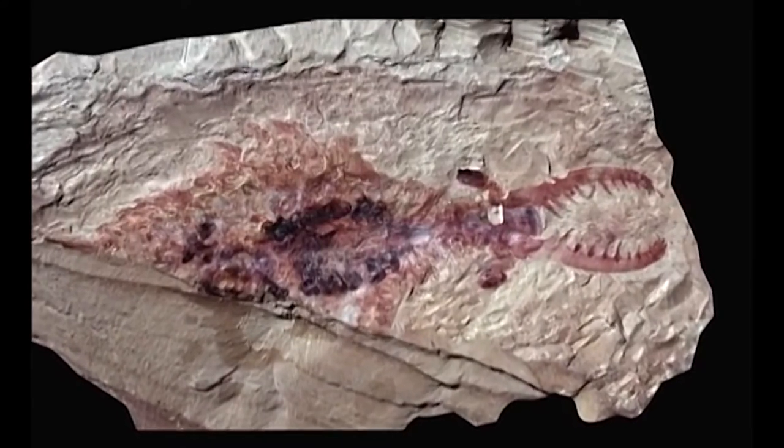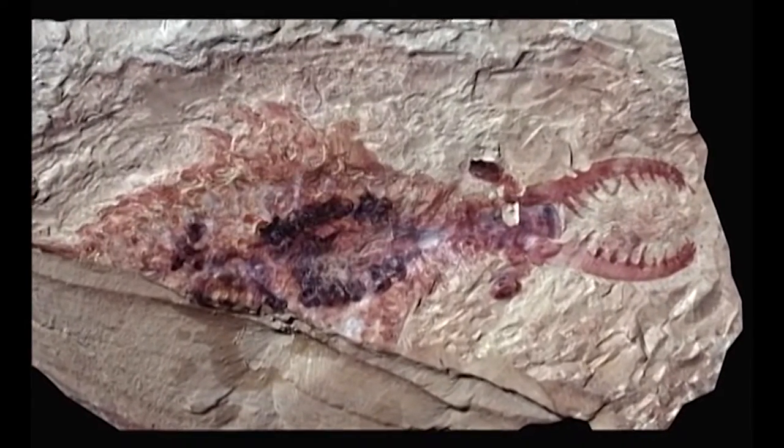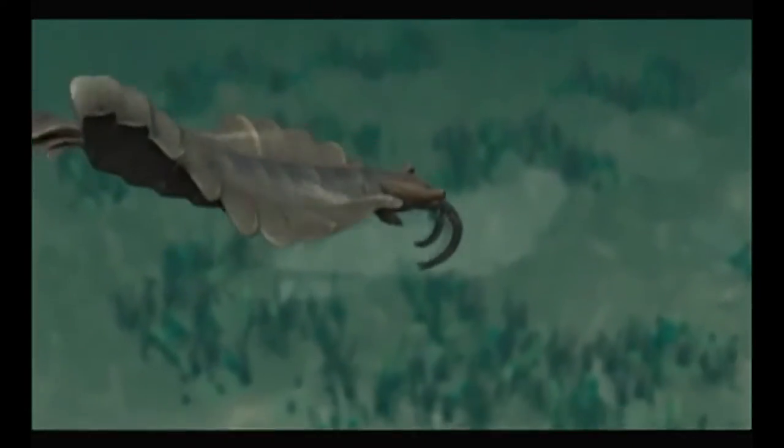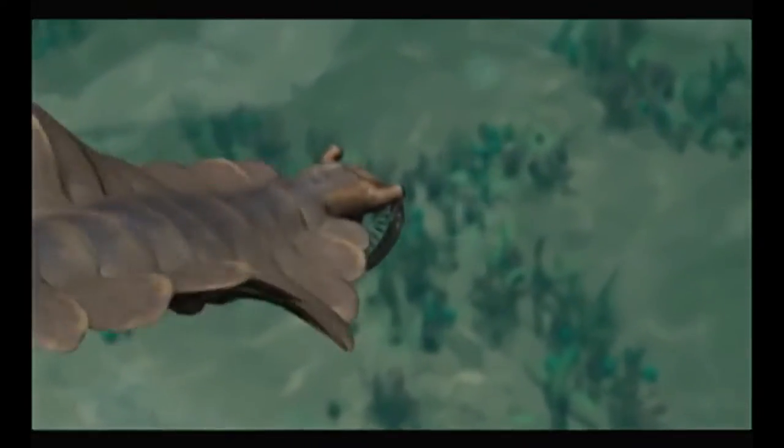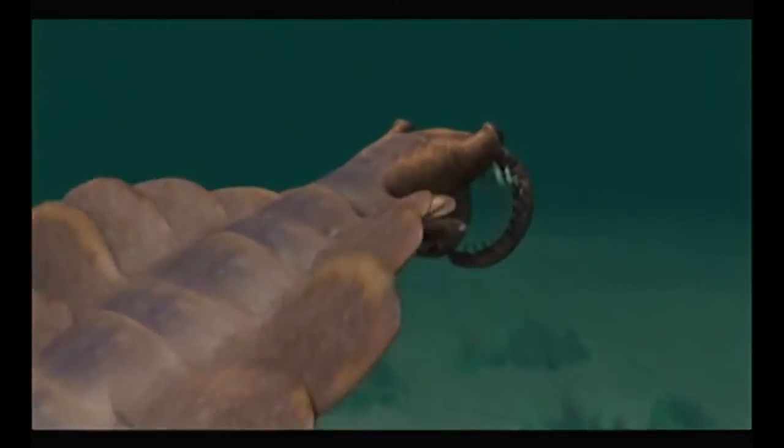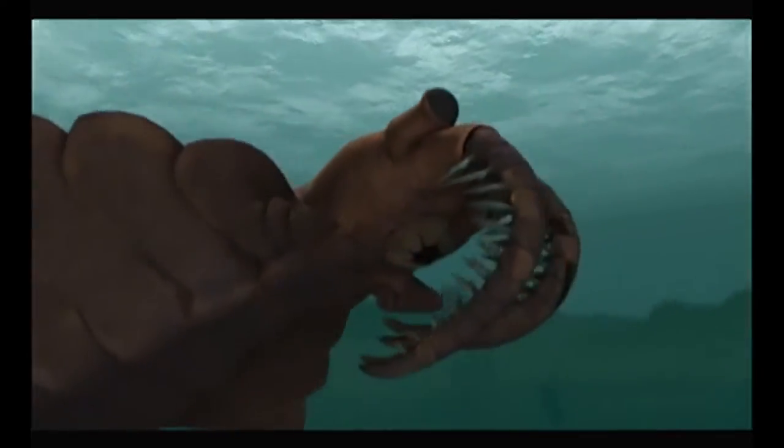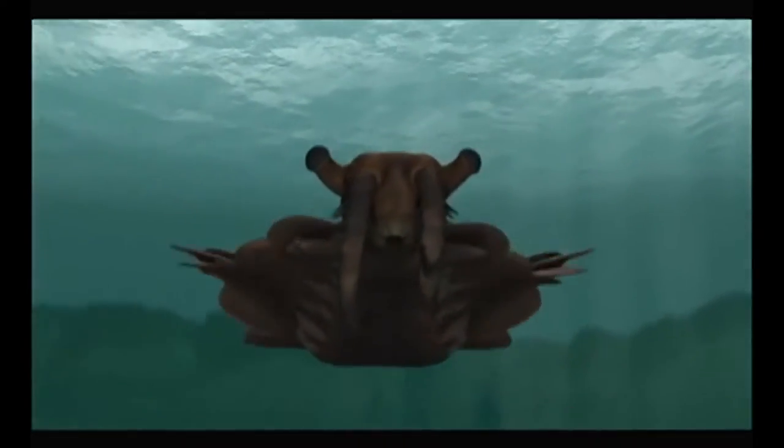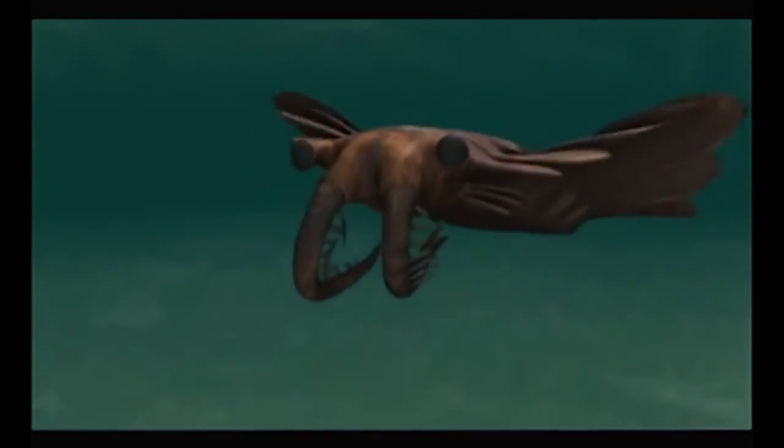How did these new animal body plans and fundamentally new forms of life come into existence? This was the mystery that Darwin set out to solve. But everything we've learned in biology over the last 50 years has brought this mystery back with a vengeance. How do you explain the origin of the Cambrian animals seemingly out of nowhere? This isn't just a problem of explaining the absence of evidence in the fossil record. It's also a problem of explaining everything we know about life right down to the level of molecules and cells.